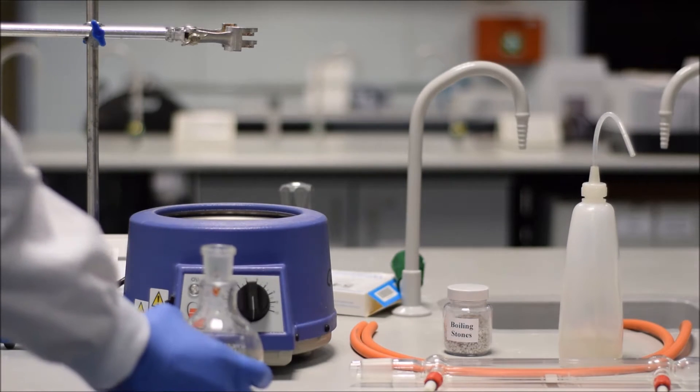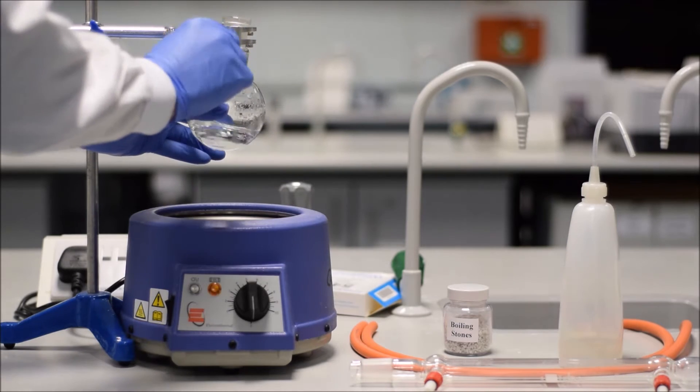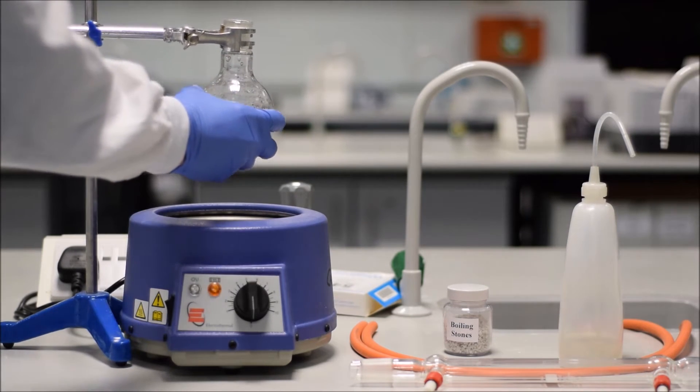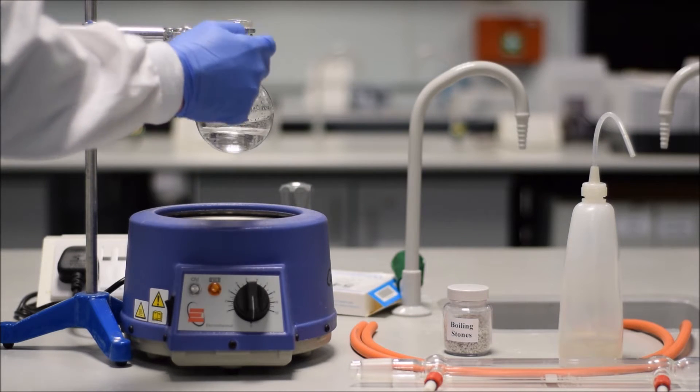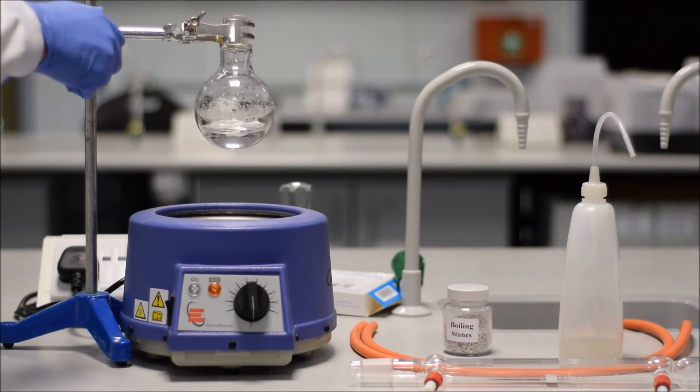The first and most important part of all of this is that your flask is securely clamped. There's a whole bunch of reasons why this is important, but if you're going to securely clamp it, clamp it around the neck like so, and make sure that it's not going to fall out. You can see that it's still free to rotate, but it's well held.